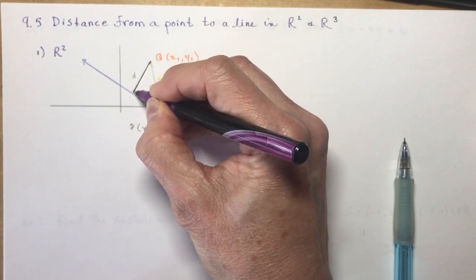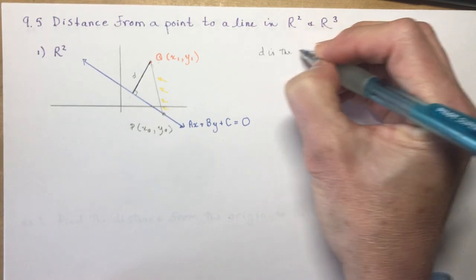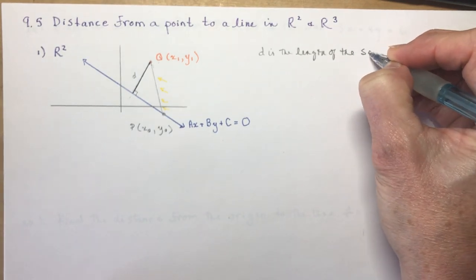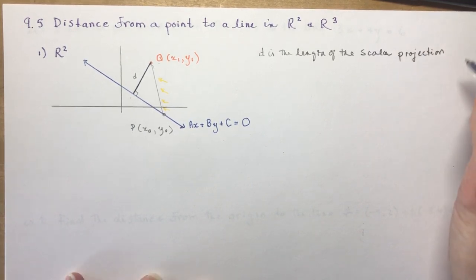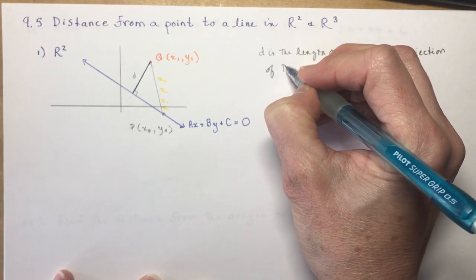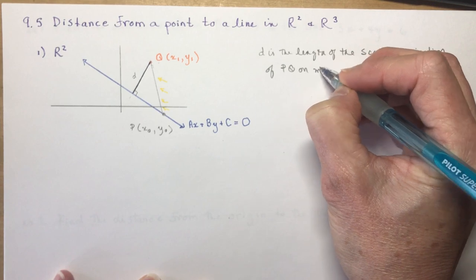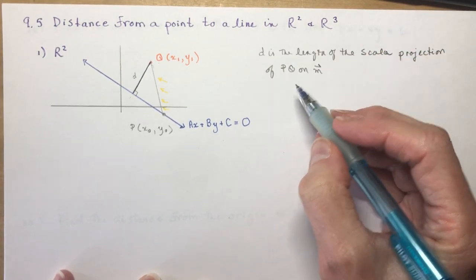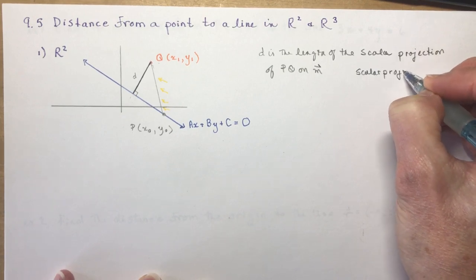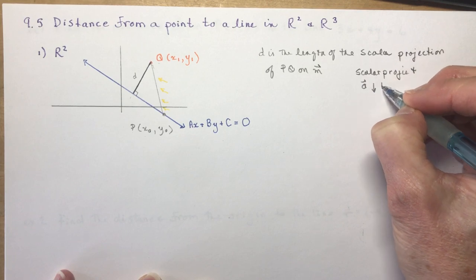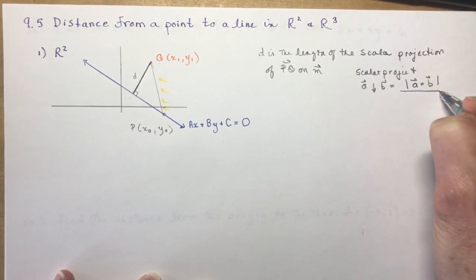What we're going to use is a scalar projection. D is the length of the scalar projection. Let's find the scalar projection of PQ onto M. Recall the formula: the scalar projection of vector a onto vector b is equal to the magnitude of a dotted with b, divided by the magnitude of b.